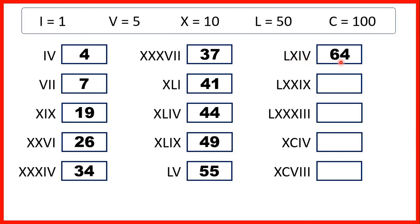LXIV is 64, because L is 50, and X is 10, so if we have 50 and then 10, we have 60, and then IV is 1 before 5, so that's 4. LXXIX is 79: L is 50, and then 2 tens makes 70, and IX is 1 before 10, so that's 9.